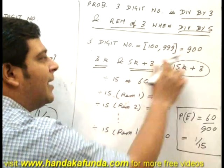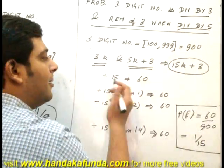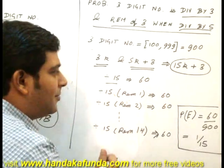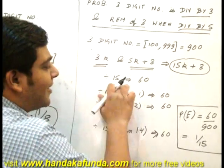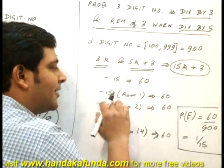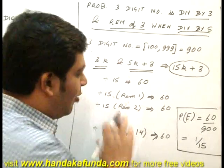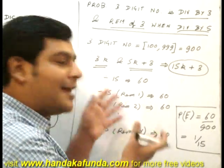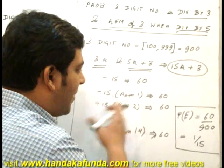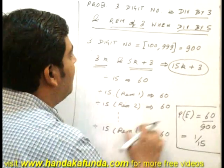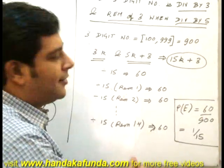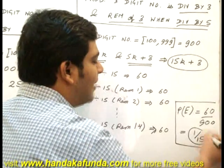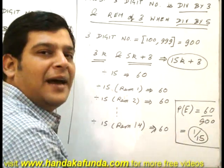How many of these 900 numbers are divisible by 15? 15 is a factor of 900, exactly 60 are divisible. If 60 are divisible by 15, how many will give remainder 1? 60 only. Remainder 2? 60 only. It is the same set. So for my question, how many favorable cases? 60. Total cases is 900, so my answer is 60 by 900 or 1 by 15.